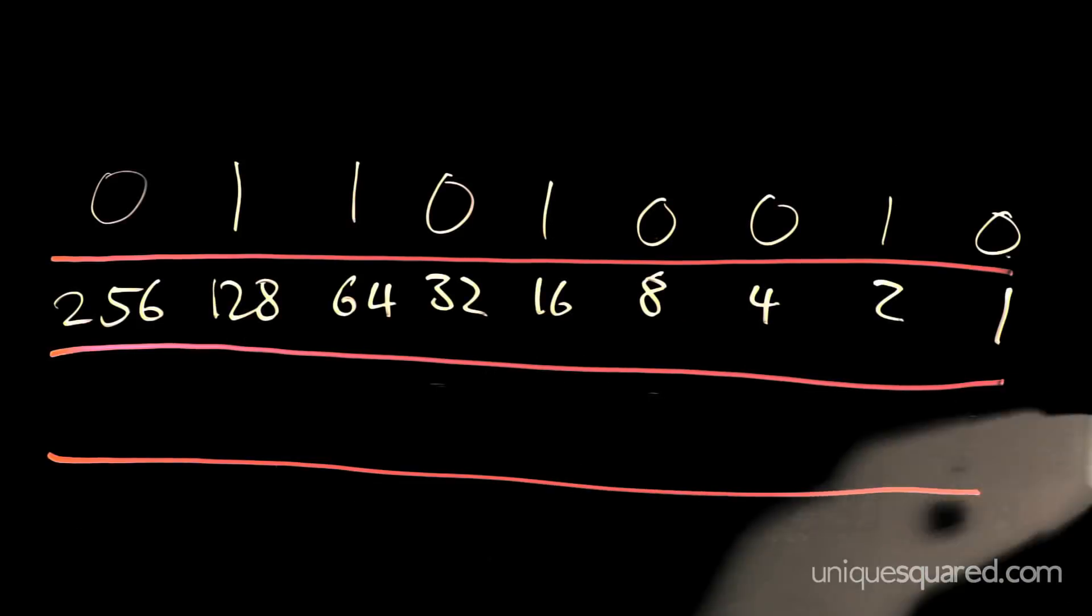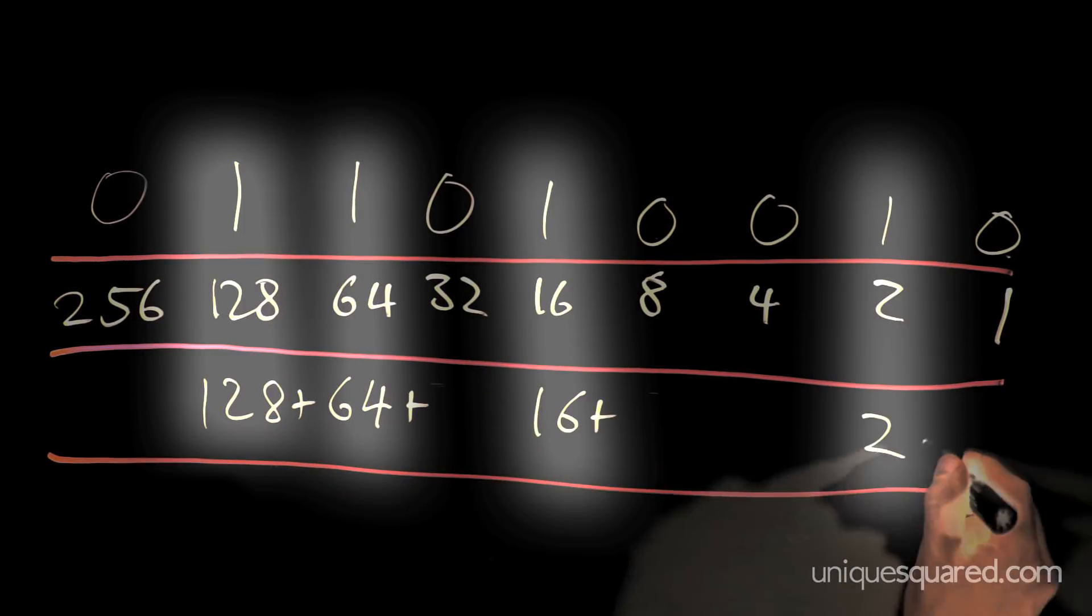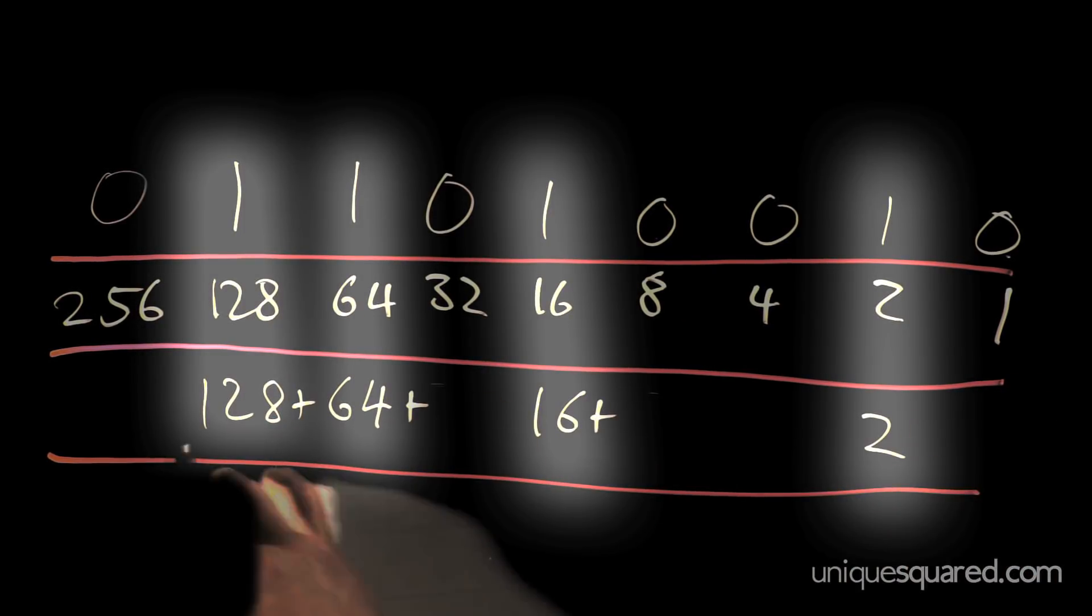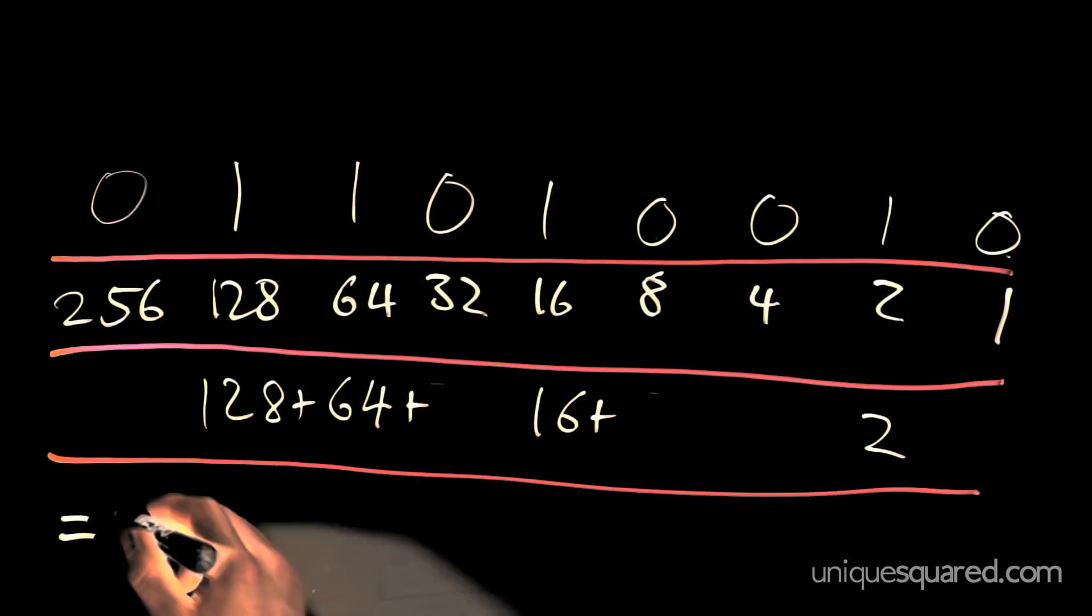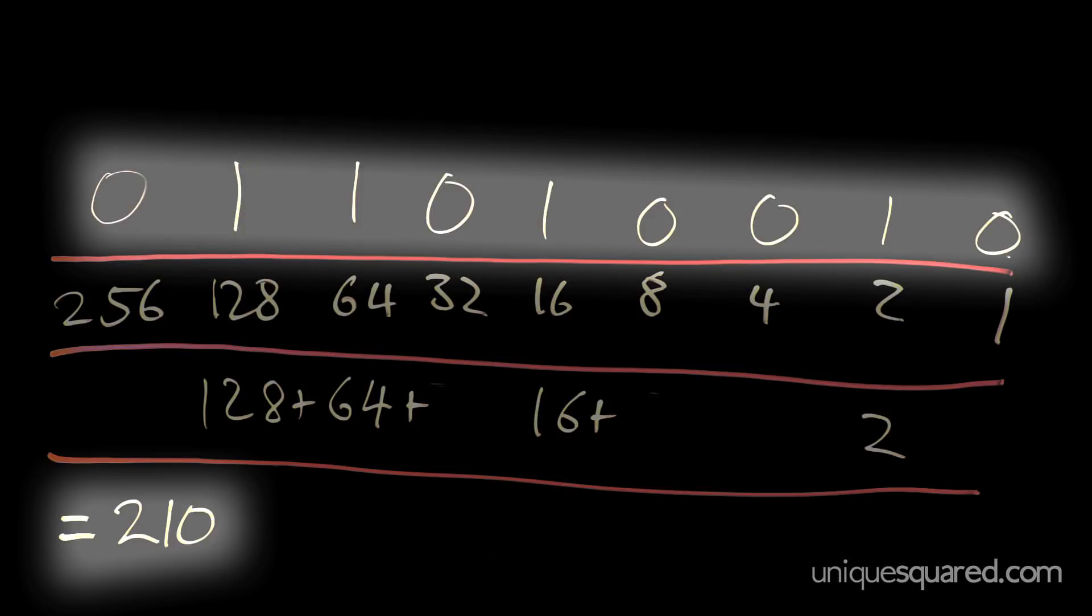Here's another example. 128, 64, 16, and 2 correspond to the 1s in this binary number. Let's add them together, and you've got 210. That is the value of that binary number.